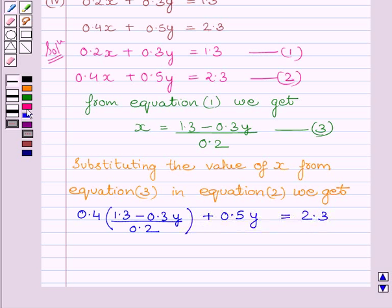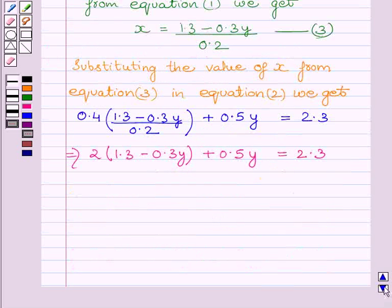Which implies 2 multiplied by 1.3 minus 0.3y plus 0.5y is equal to 2.3. Which further implies 2.6 minus 0.6y plus 0.5y is equal to 2.3.